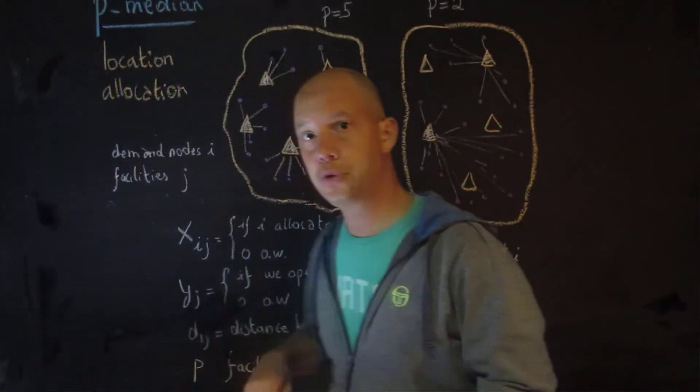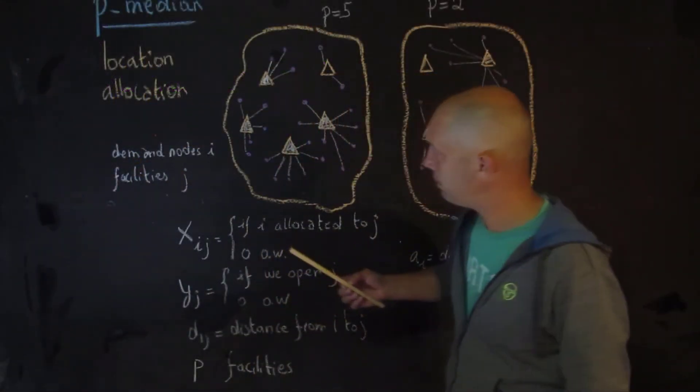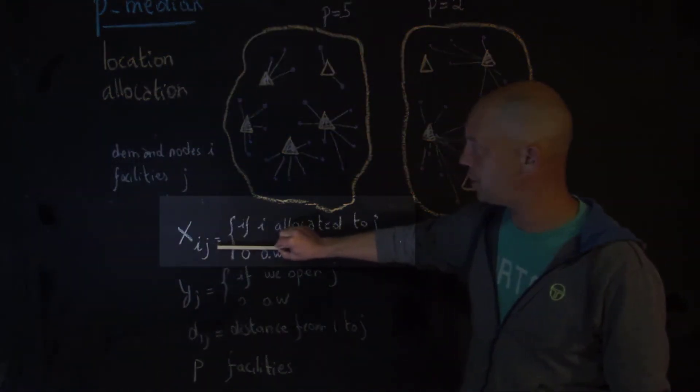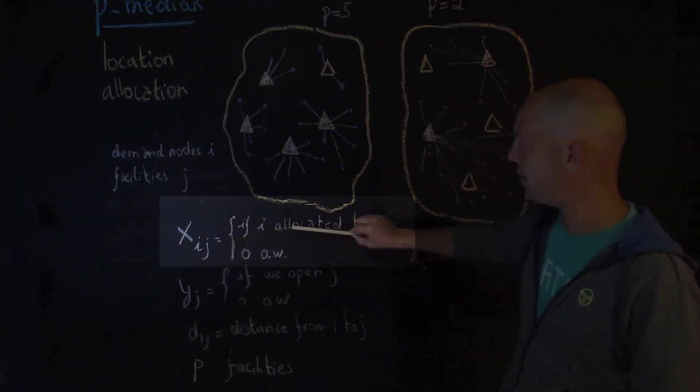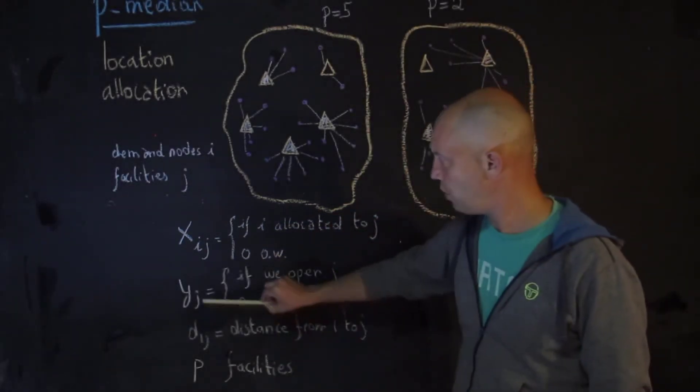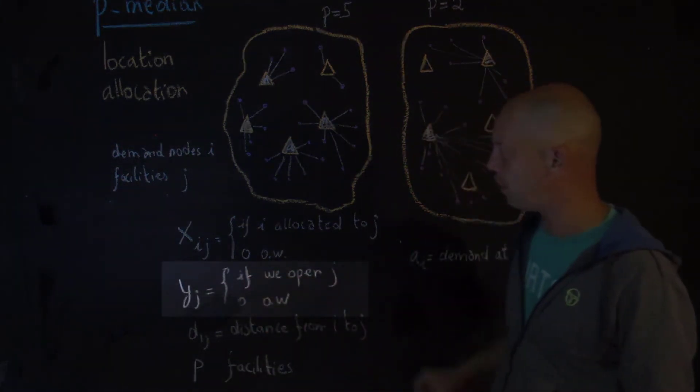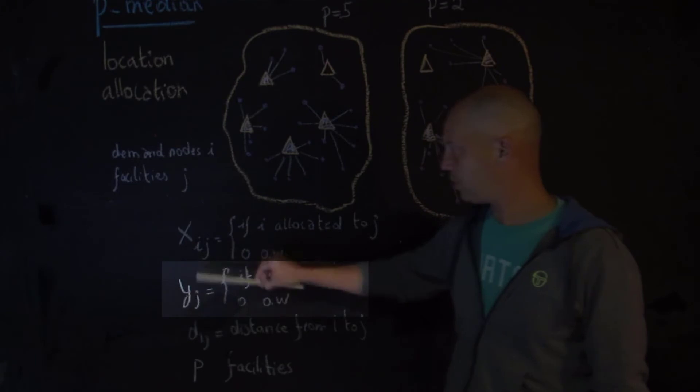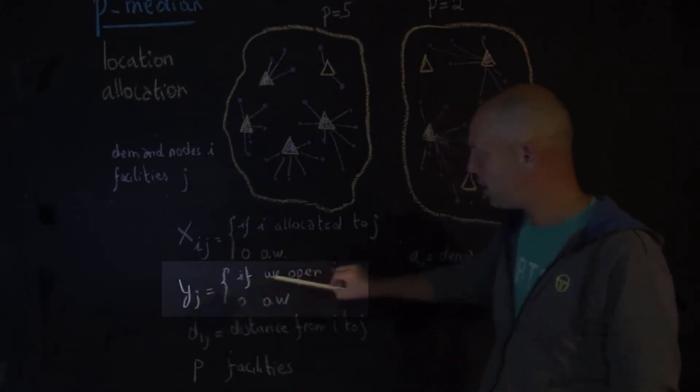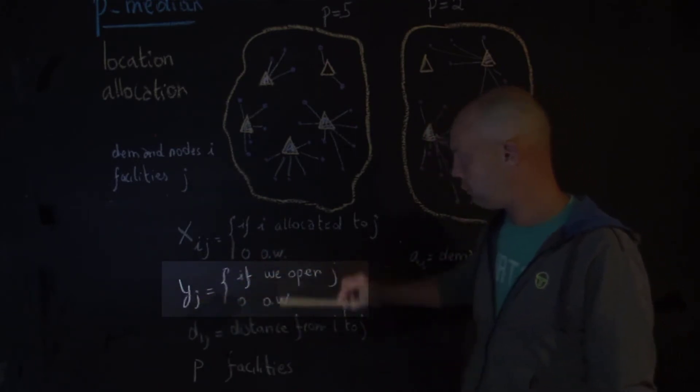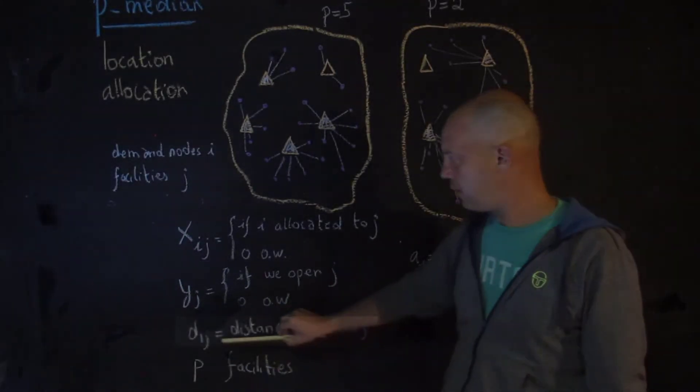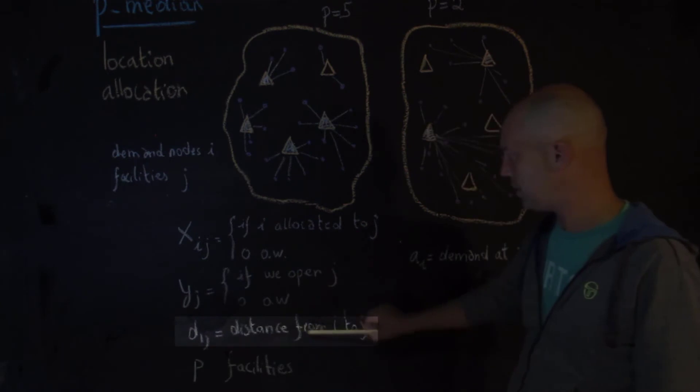So we'd like to introduce some new notation to our problem. The new decision variable is xij, which is equal to 1 if demand node i is allocated to facility j and 0 otherwise. We have this new variable, although in the coverage model we used x's, so now we just switch. y sub j is equal to 1 if we open a facility j, so if the facility is selected, 0 otherwise. And then we have dij, which is the distance from i to j. And then you also have p, which limits the number of facilities.